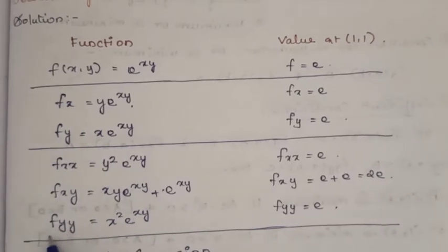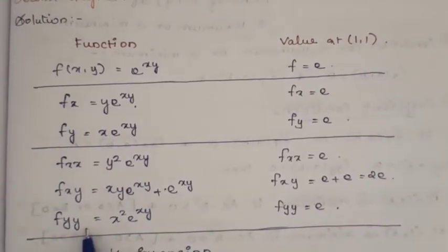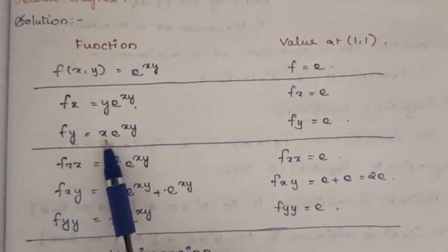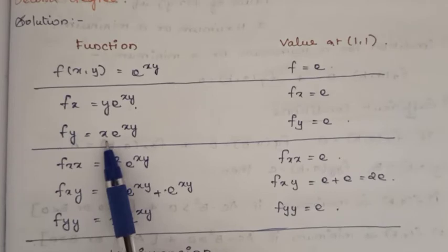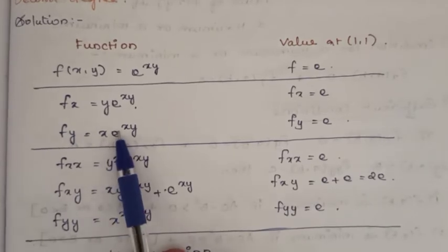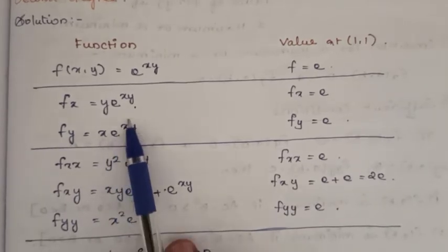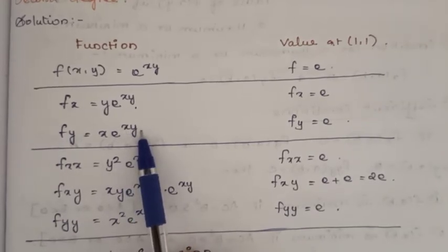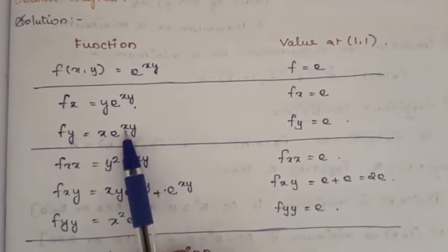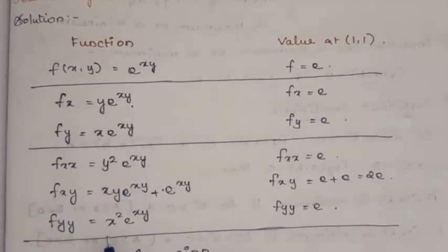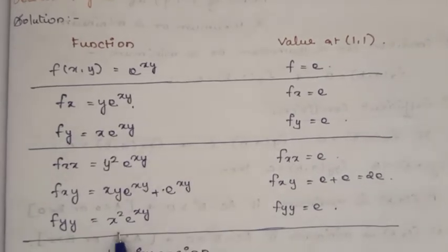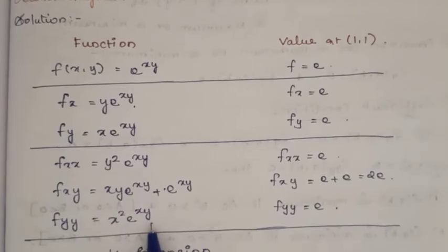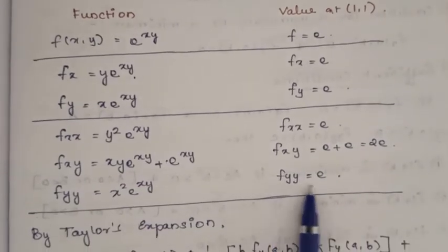For fxx: differentiate fx = y·e^(xy) with respect to x. Since y is constant, we get y·(y·e^(xy)) = y²·e^(xy). At (1,1): fxx = e. For fxy: differentiate fx = y·e^(xy) with respect to y using the product rule, giving xy·e^(xy) + e^(xy). At (1,1): fxy = e + e = 2e.